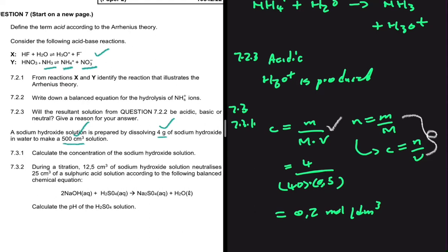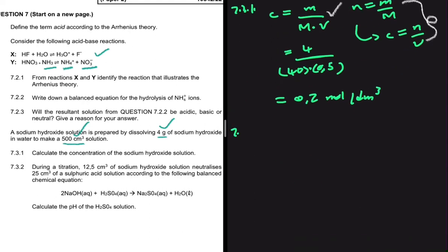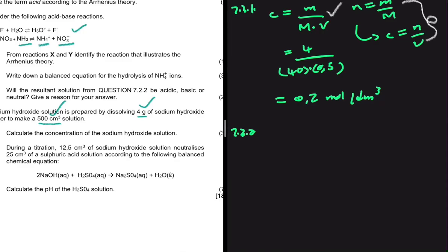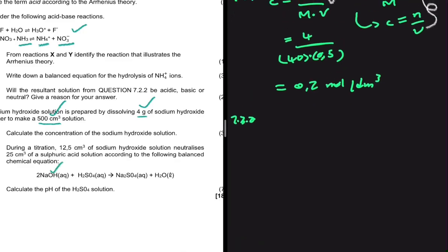For 7.3.2, during a titration 12.5 cm³ of sodium hydroxide solution neutralizes 25 cm³ of sulfuric acid according to the balanced equation: 2NaOH + H2SO4 → Na2SO4 + 2H2O. We are required to calculate the pH of the H2SO4 solution, using pH = −log[H+].